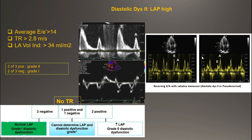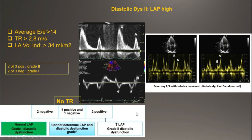First, we can perform a Valsalva maneuver. During the strain phase, if E to A becomes reversed or the E to A ratio decreases by more than 50 percent, this is positive and the patient has pseudo-normal diastolic dysfunction. If that is not done or is inconclusive, we check the three parameters. If two are positive, grade 2. If two are negative, grade 1. If TR is absent, we check the other two: both positive means grade 2, both negative means grade 1. If one is positive and one negative, we check additional parameters including the S to D ratio.